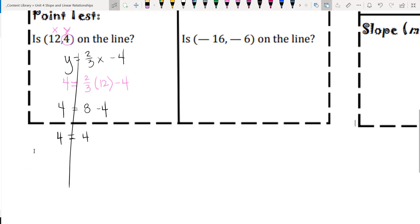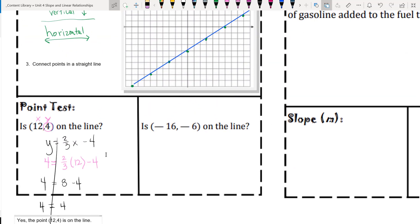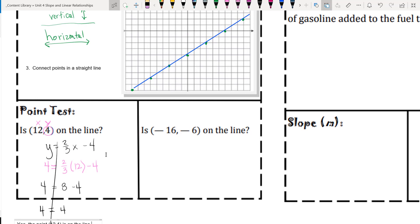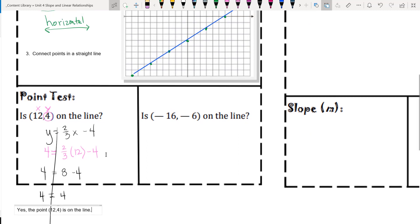So then my conclusion is, yes, this point, the point (12, 4) is on the line. And I can do that without having to use the graph. Because this graph only goes to a positive 10 for the x coordinate. So I couldn't tell from this graph if (12, 4) would be on the line.